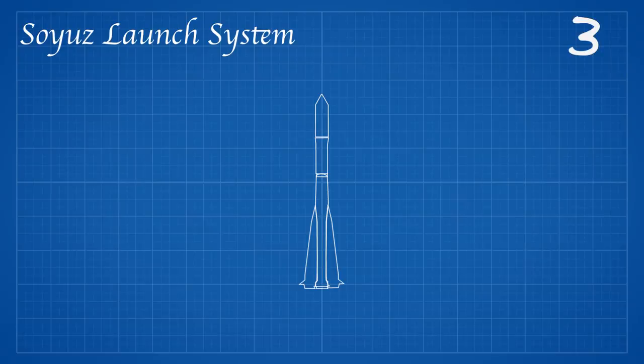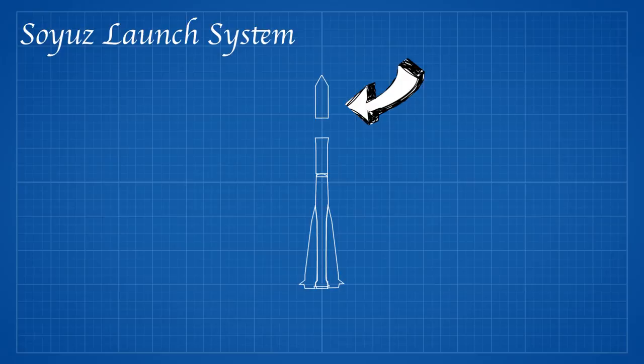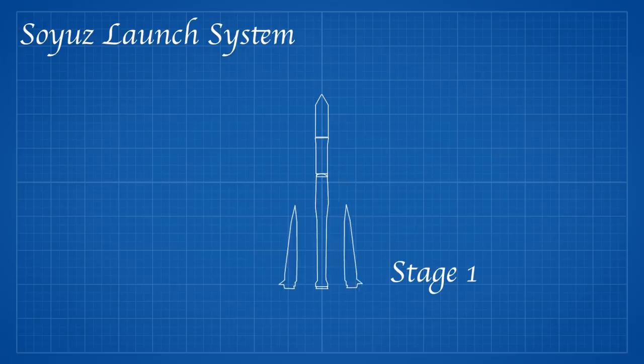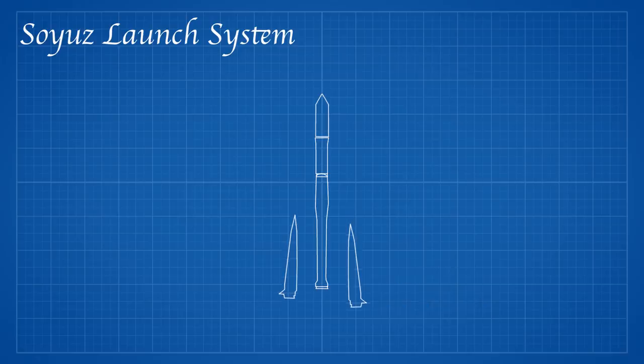The Soyuz system used two parts: the rocket, known as the launch vehicle, and the spacecraft, which included the re-entry vehicle. The rocket consisted of three stages. The first was four identical conical liquid booster rockets attached to the second stage. The first stage provided the main thrust in the first two minutes of flight and was subsequently jettisoned.